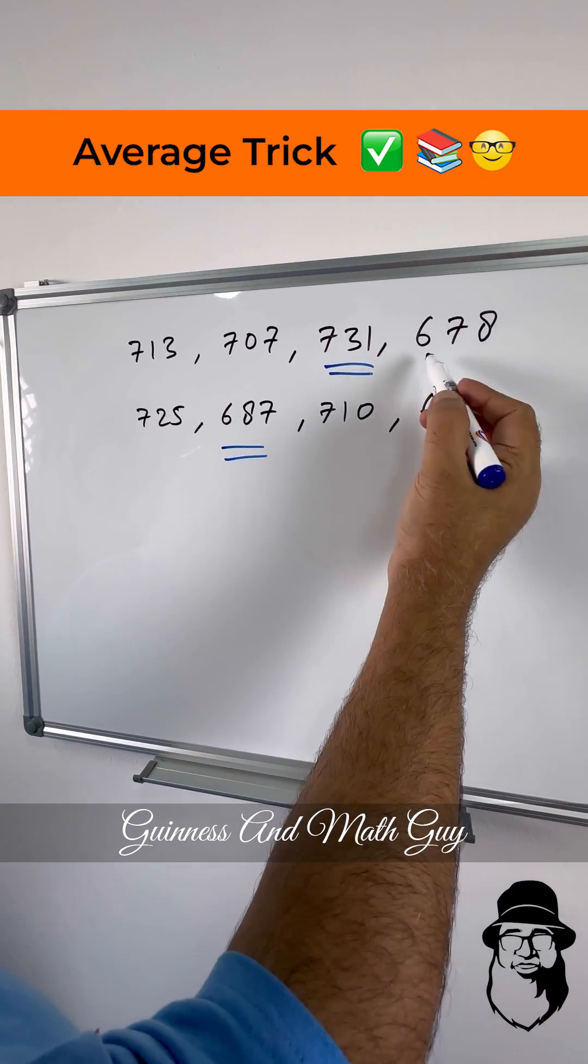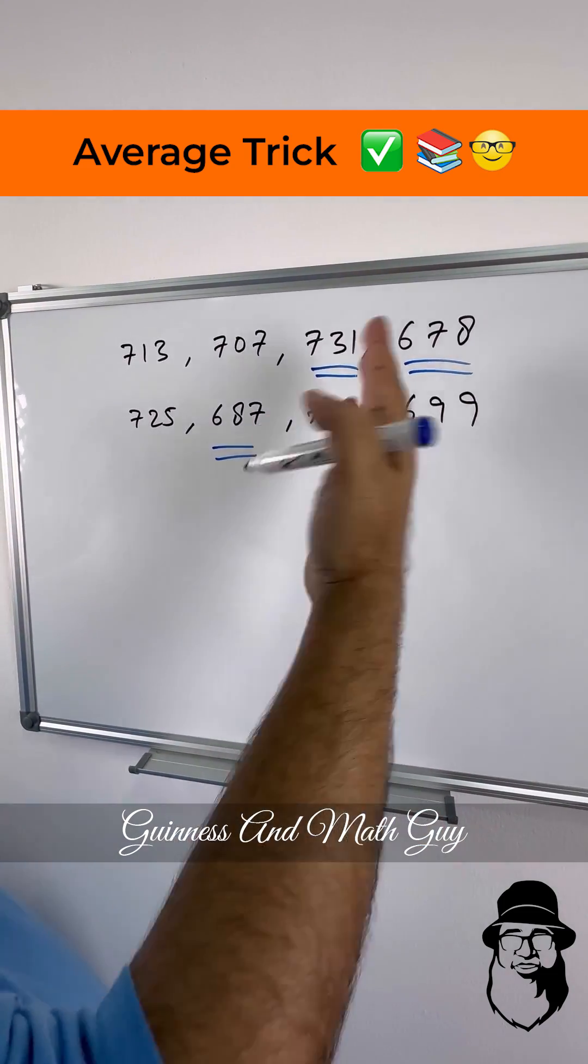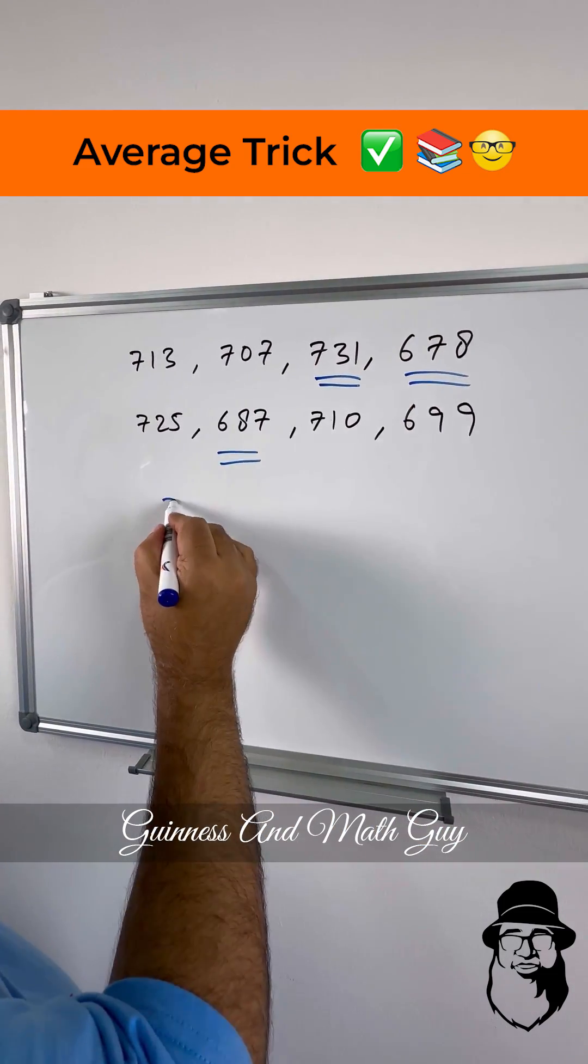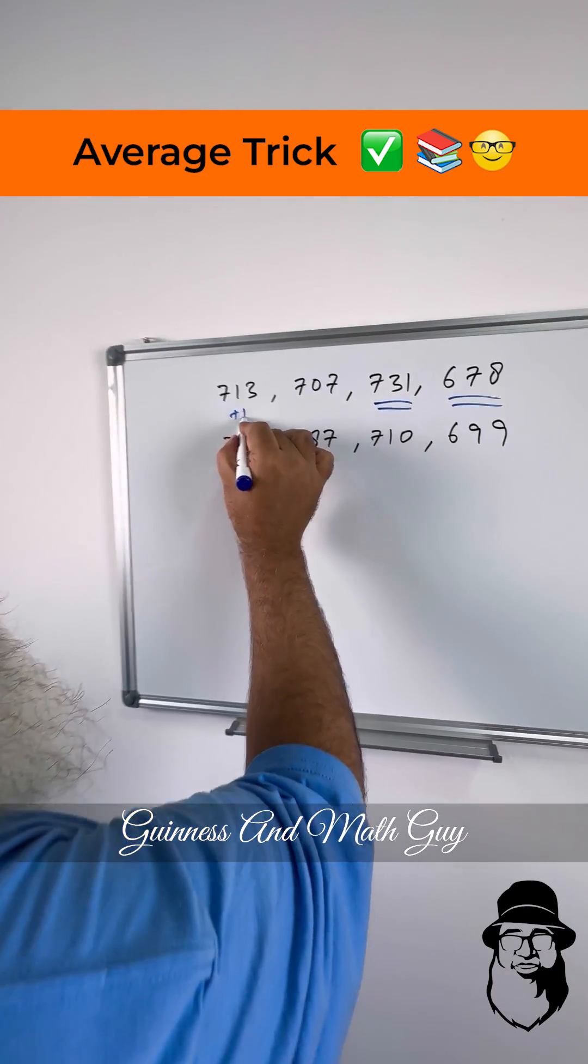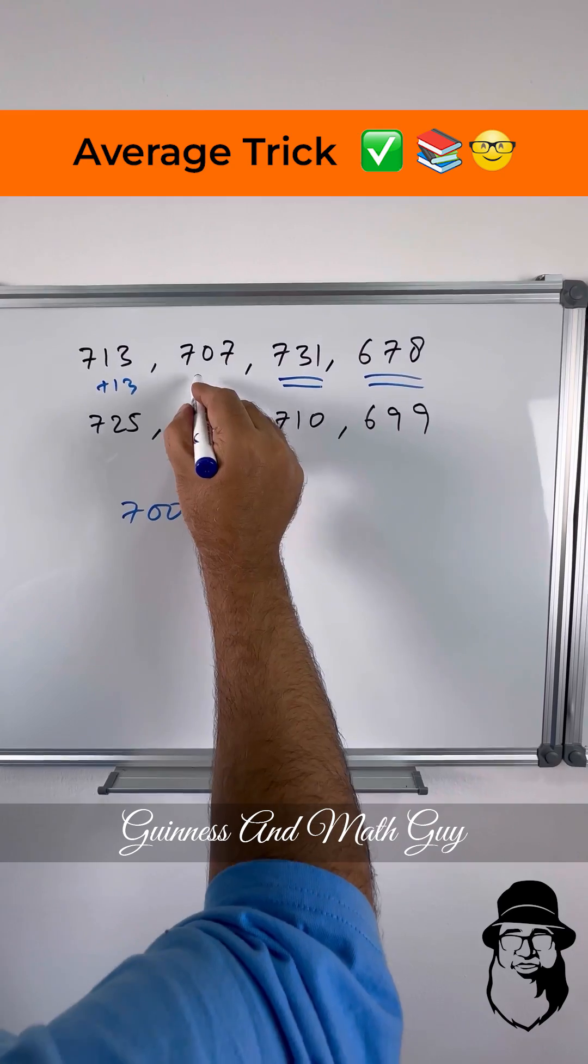We can take any friendly number, let's say 700, and we assume that this is the average. Now this is plus 13, right? 700 plus 13. This is plus 7, this is plus 31, this is minus 22.